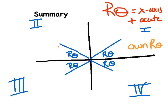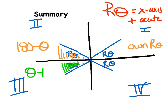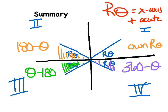In quadrant two, to get this angle I basically take 180 degrees and subtract theta. In quadrant three, I do the opposite — take the whole angle and subtract 180 degrees. In quadrant four the x-axis is the 360 line, not 180, so I take 360 and subtract theta to get my reference angle. It kind of looks like a bow tie: 180 on this side for quadrants two and three, 360 on this side for quadrant four, and in quadrant one you're your own reference angle.